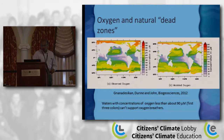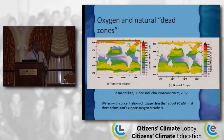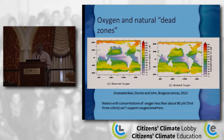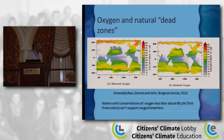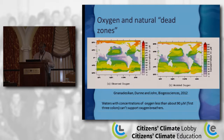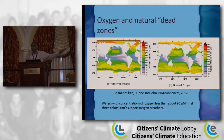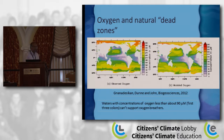The bluish colors represent very low concentrations of oxygen. Many of you have heard of dead zones — the Chesapeake Bay has one, there's one off the Louisiana coast caused by nutrient runoff. But these are the real big dead zones of the ocean. About 10% of the ocean has oxygen so low it can't support oxygen-breathing life — it can't support fish that use gills. These are natural, arising because it's very difficult for surface waters to reach these locations.